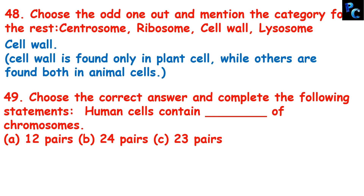Choose the correct answer and complete the following statement: human cells contain how many chromosomes — 12 pairs, 24 pairs, or 23 pairs? It is 23 pairs, that is 46 chromosomes.